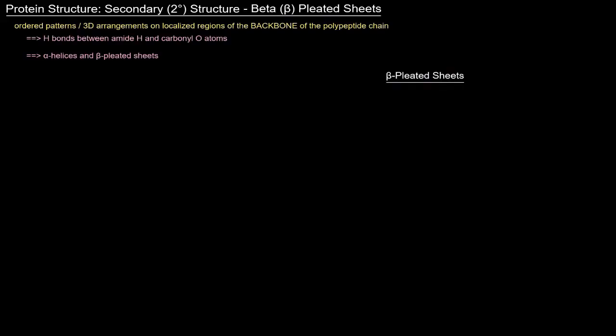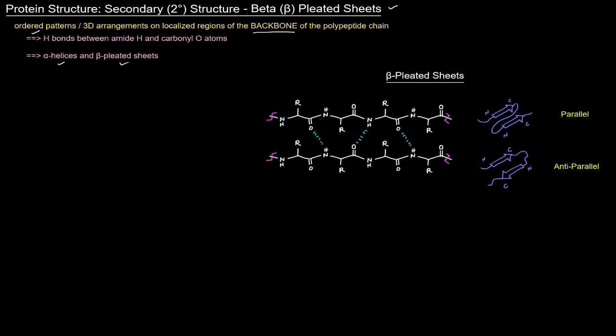We'll continue our talk of secondary structure by discussing the other ordered pattern of the polypeptide chain backbone. We've already talked about alpha helices, so now in this video we're going to talk about beta-pleated sheets. Beta-pleated sheets look a lot different than alpha helices. So what do they look like? Like this.